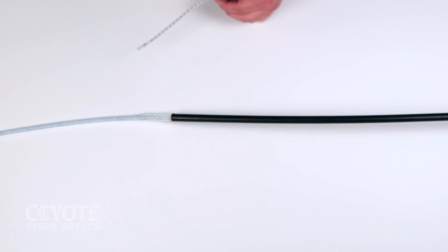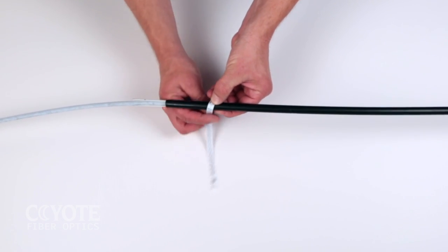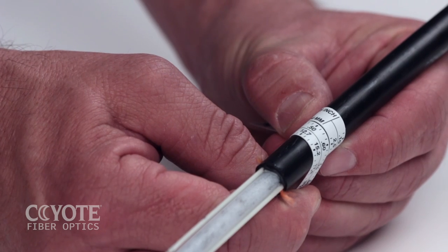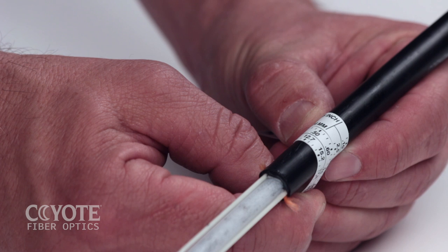The first step to properly assemble the Coyote dome closure is verifying your cable diameters. A measuring tape is provided in every grommet kit. This tape indicates my cable has a 0.5 inch OD.